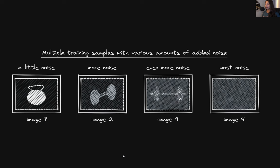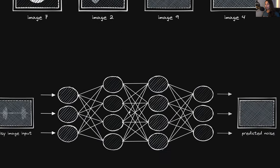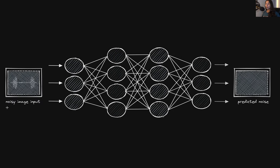After we have our training data with added noise, we pass the noisy image as input to the model, and as output the model gives us what it predicts as being the noise present in the input image. So we're simply passing noisy images and asking the model to predict the noise present in those images. We then do the typical neural network training where we calculate the loss between the predicted noise and the actual noise, calculate the gradient of the loss with respect to all of the weights, and update the weights. We continue to iteratively repeat this process, allowing the network to get better and better at predicting the noise.